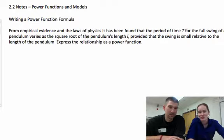So, from empirical evidence and the laws of physics, it has been found that the period of time T for the full swing of a pendulum varies as the square root of the pendulum's length L, provided the swing is small relative to the length of the pendulum. Express the relationship as a power function.